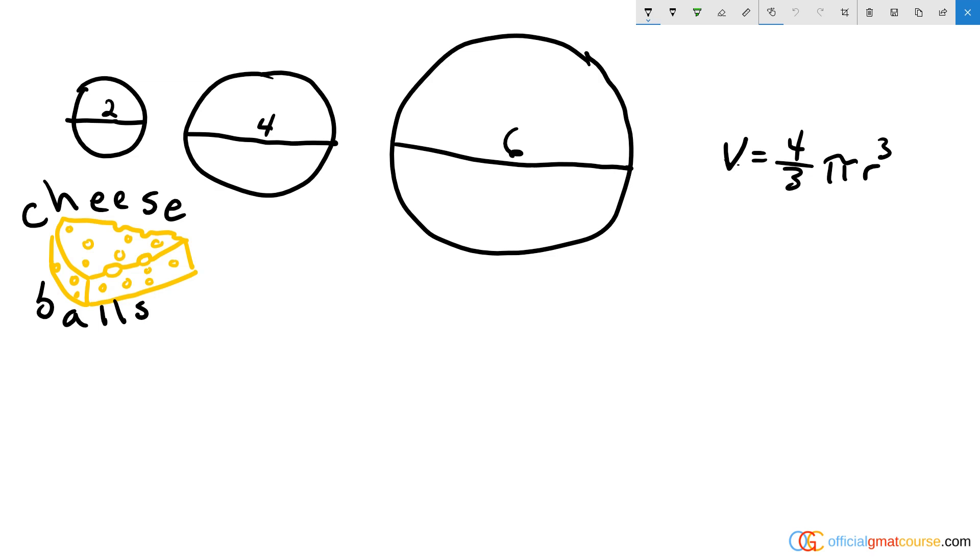They give us a little tip about how to think about this by telling us the volume of a sphere is equal to four-thirds pi r cubed. The reason they're telling us this is that the volume is the constant here. So if I mush all these cheese balls together, the total volume of the new cheese ball will be equal to the volume of cheese ball one plus cheese ball two plus cheese ball three.